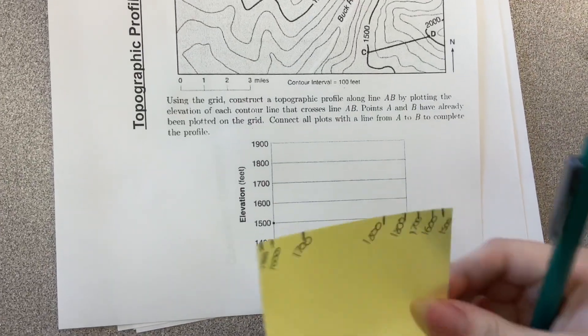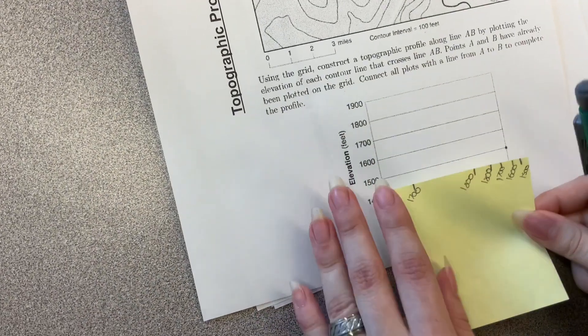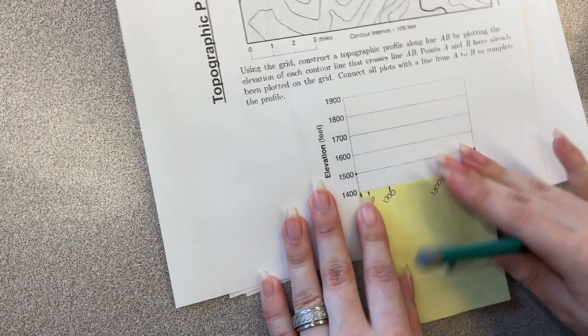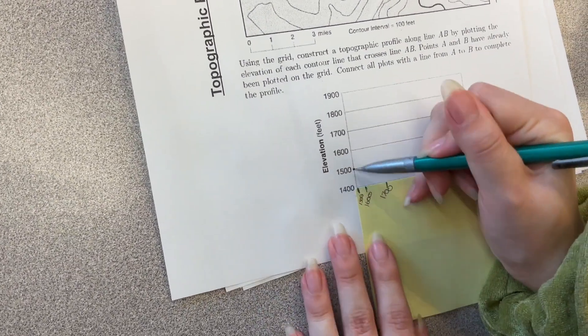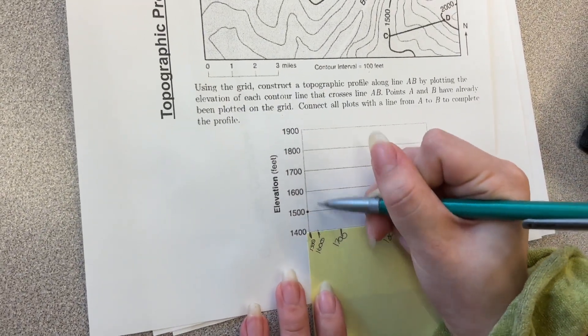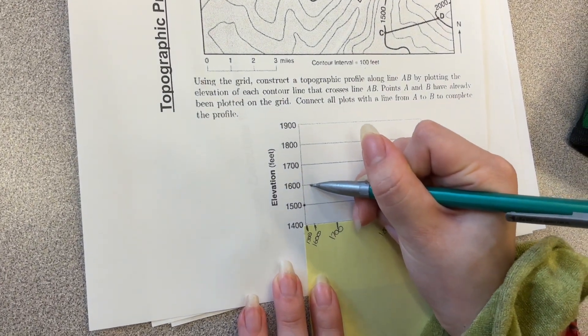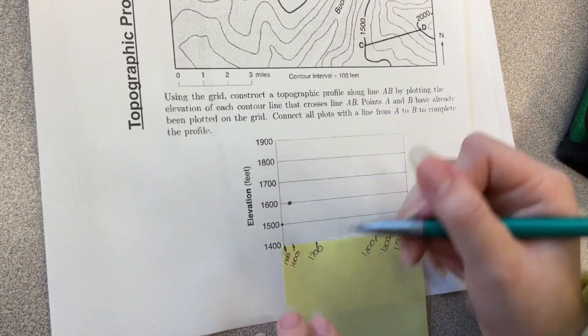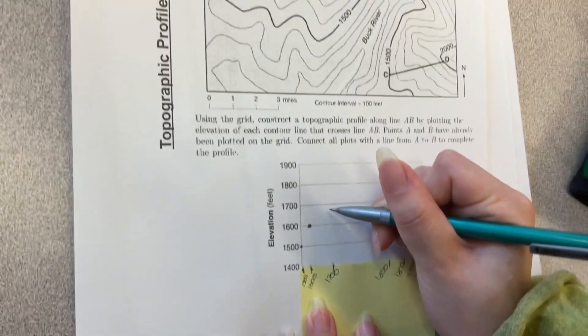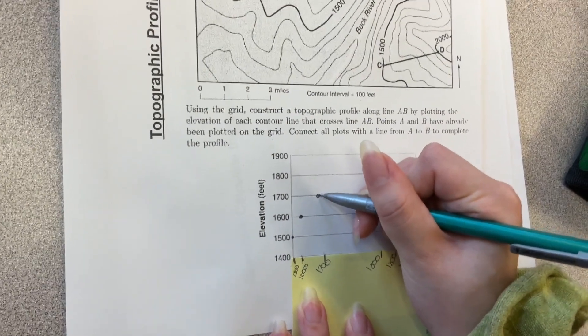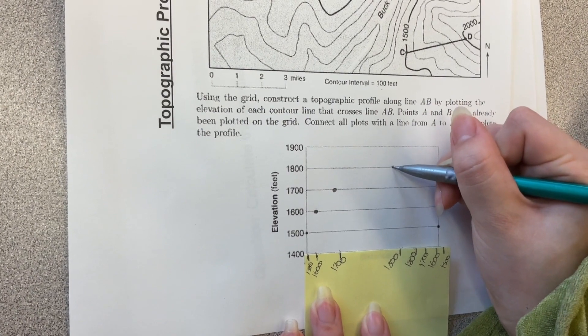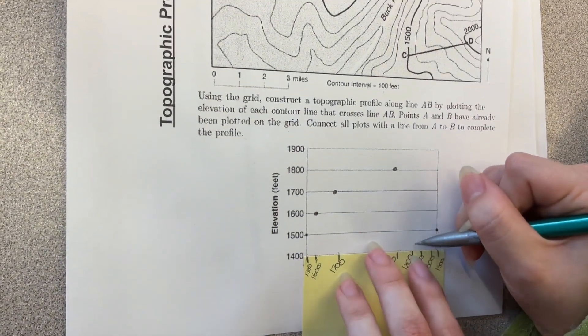So now after we got all of the elevations, if we want to graph it on the grid, we would align it with the graph. So 1500, this is A and this is B, so those are already graphed. So you would want to graph 1600. And you should make sure that you're using the same distance that you got from your contour elevation. So that's 1600 and then 1700. And then 1800, and then 1800.